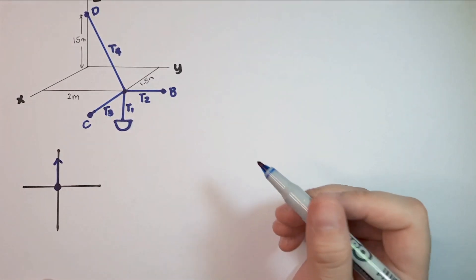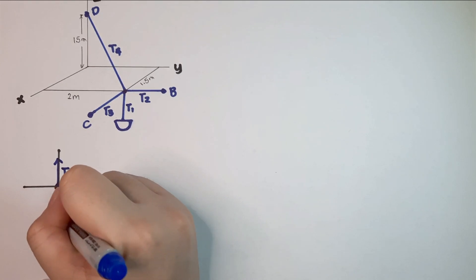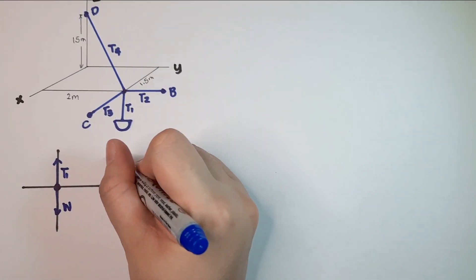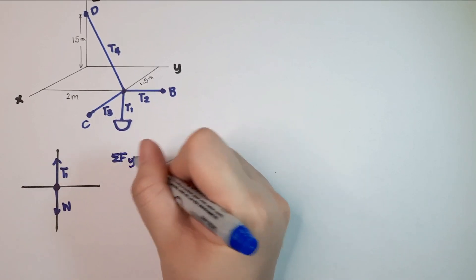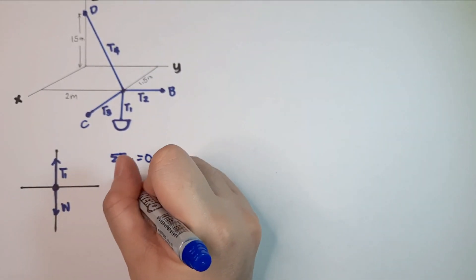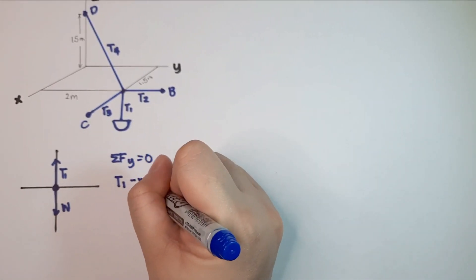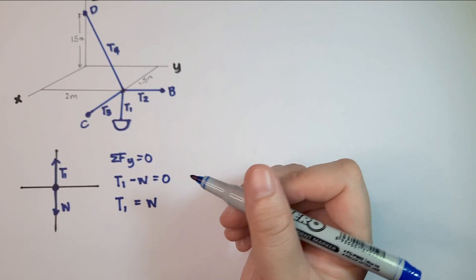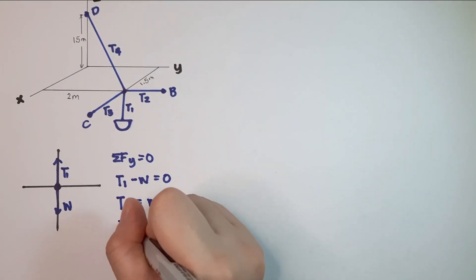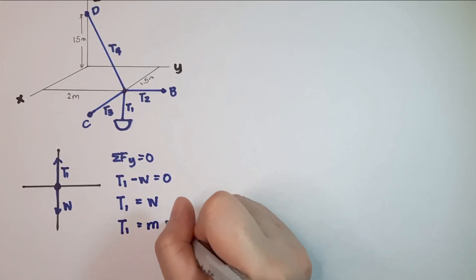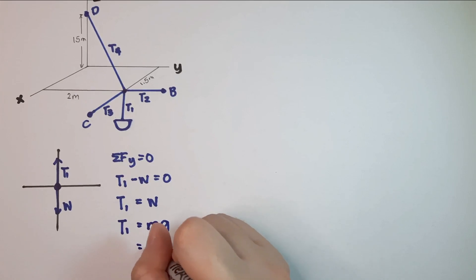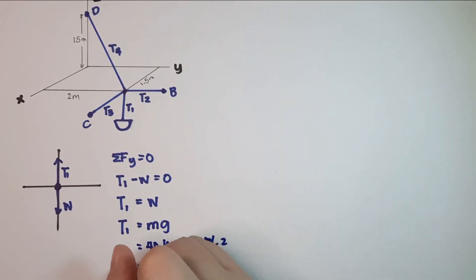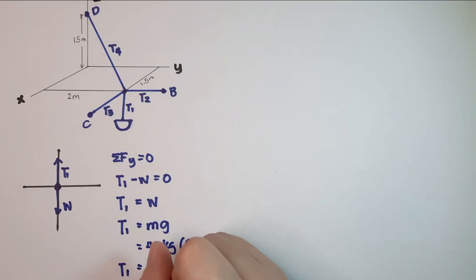The direction of T1 is going up and the direction of weight is going down. From the summation of forces along y — since these are the only forces — T1 going up minus weight going down equals zero. So T1 equals weight. Computing: T1 = mass × gravity = 40 kg × 9.8 m/s² = 392 N.